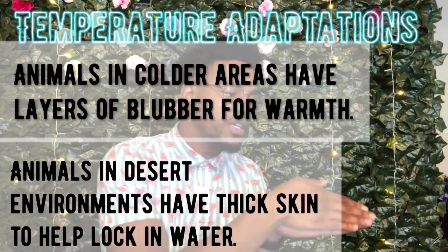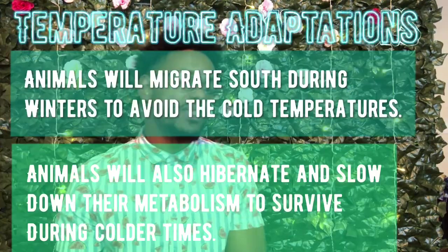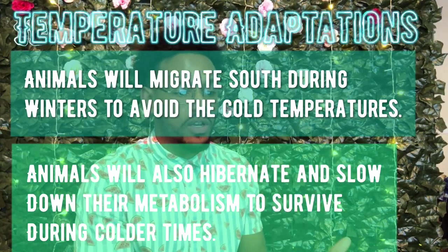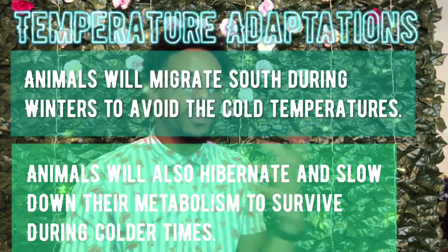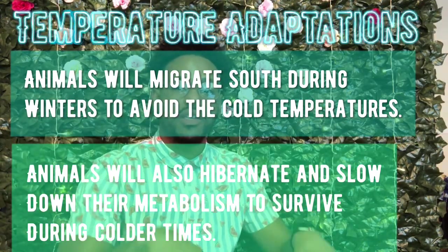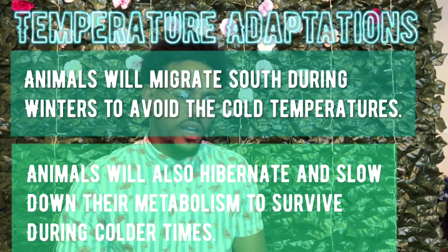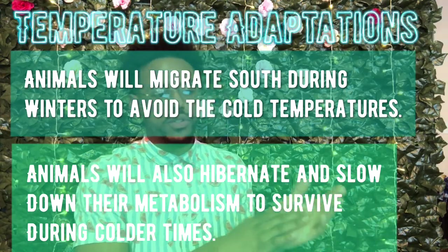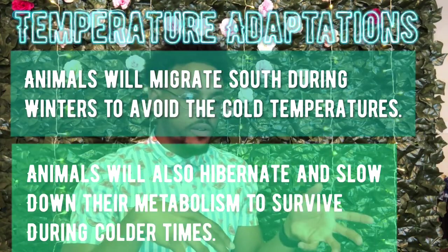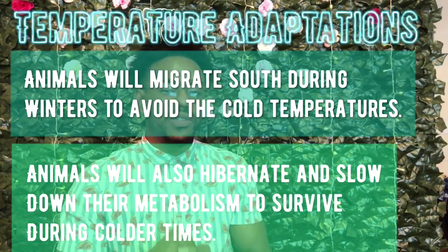Migration — the seasonal movement of an organism from one place to another — is an adaptation to extreme temperatures and reduced food supplies during winter. Birds migrate to southern areas to wait out frigid temperatures, moving to more southern or tropical areas so they don't have to worry about the freezing cold. The monarch butterfly travels to central Mexico over thousands of miles during the winter, and the Arctic tern, the gray whale, and the African elephant are other examples of animals that migrate long distances due to seasonal changes.